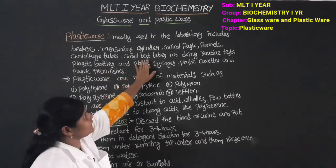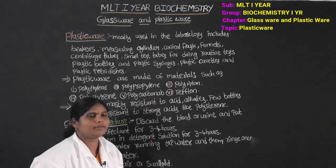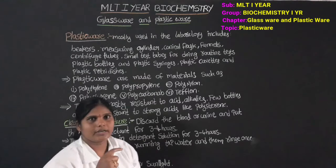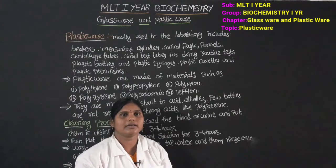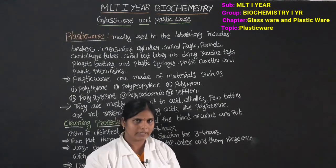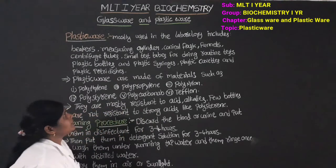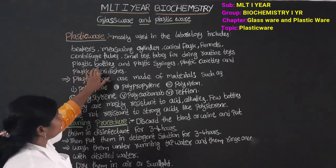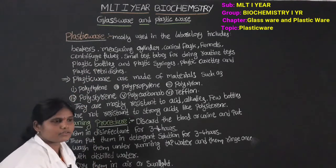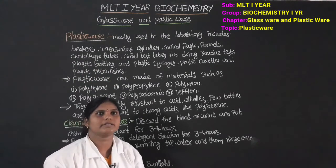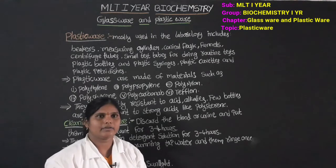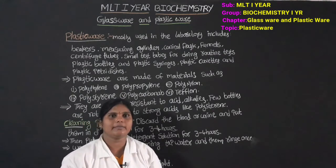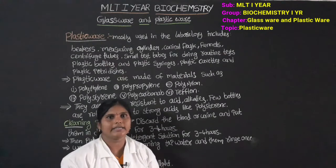Next are small test tubes for doing routine tests — normal small test tubes, round test tubes. Then next are plastic bottles; we use plastic bottles to store the reagents.